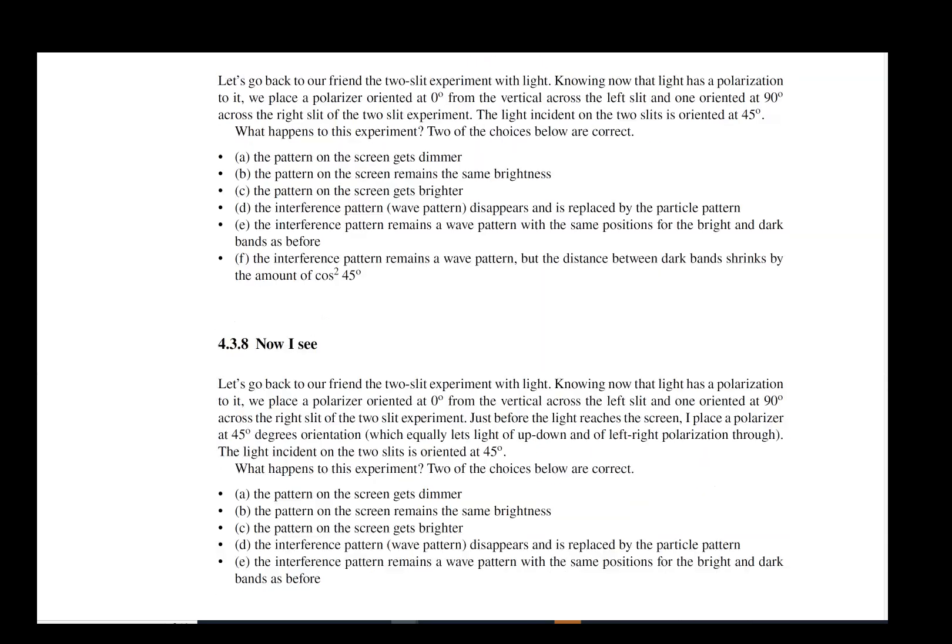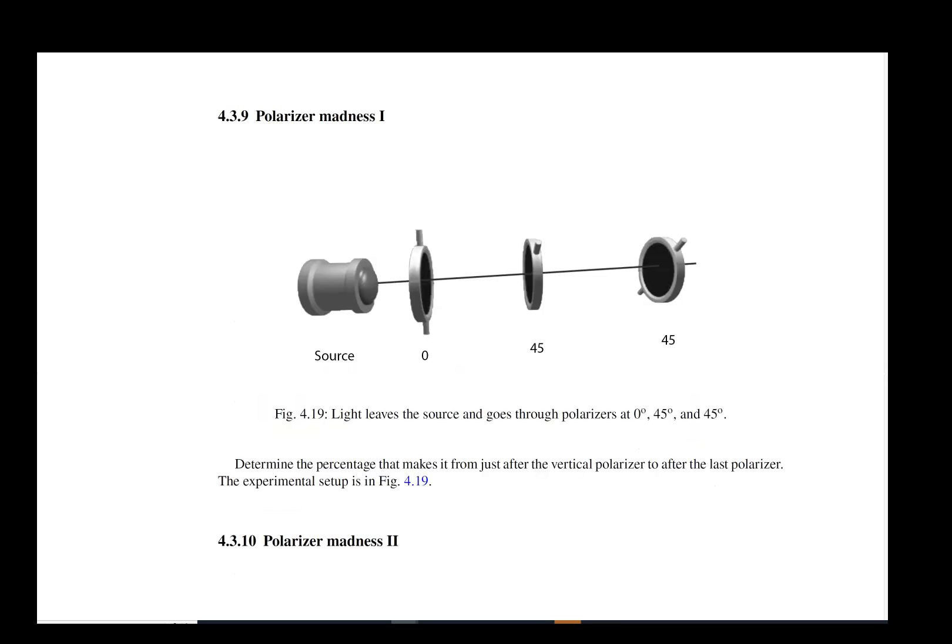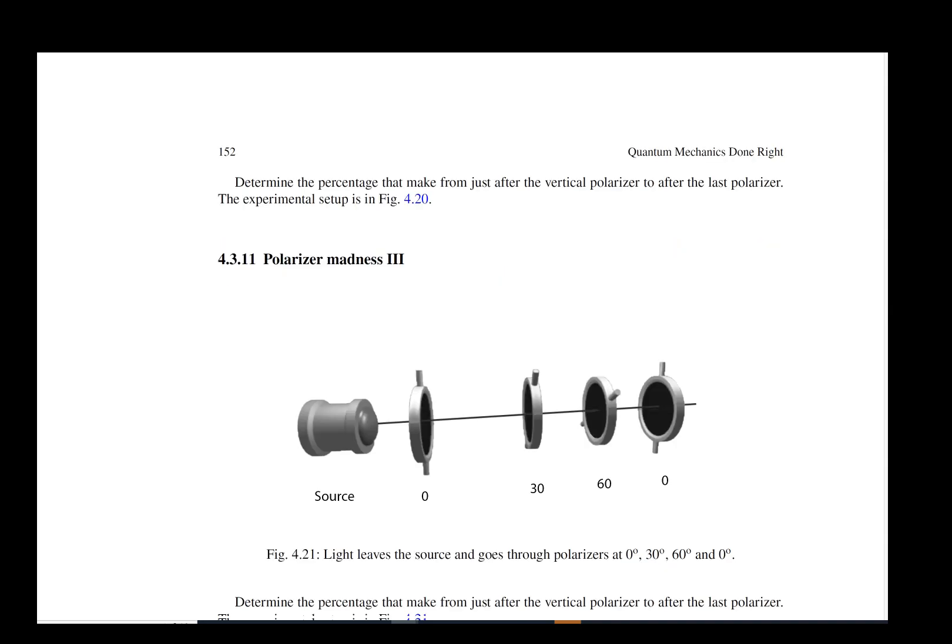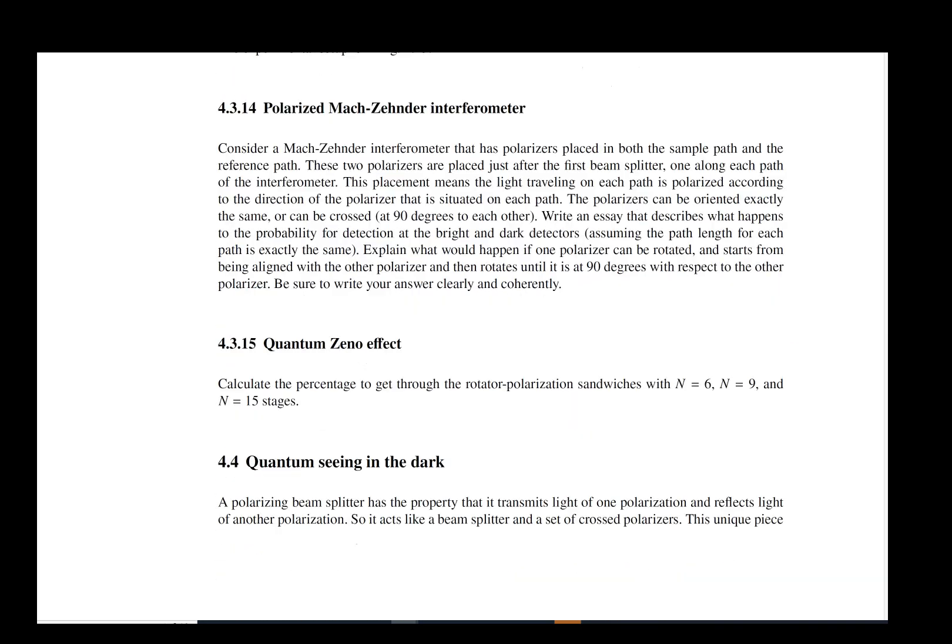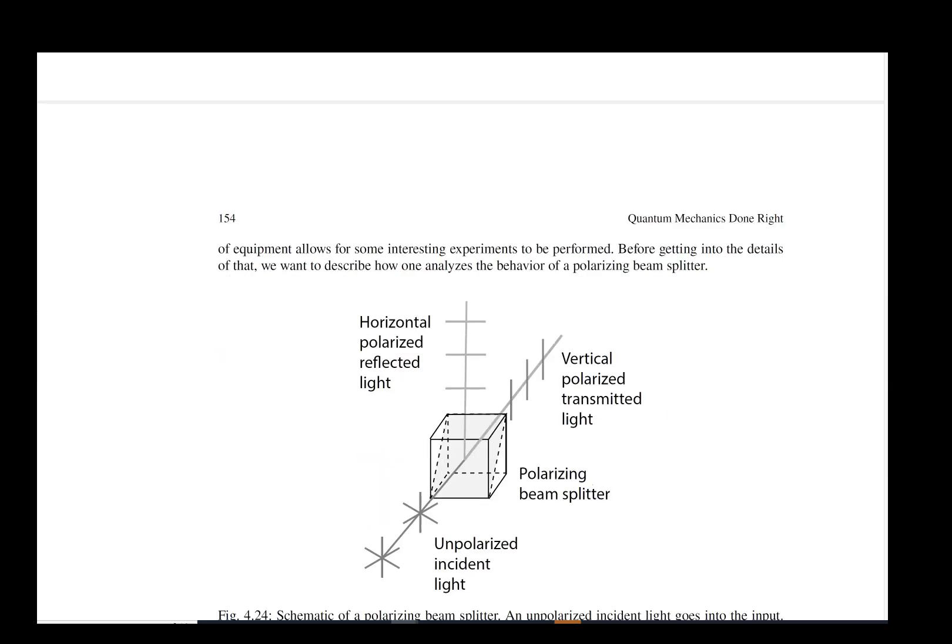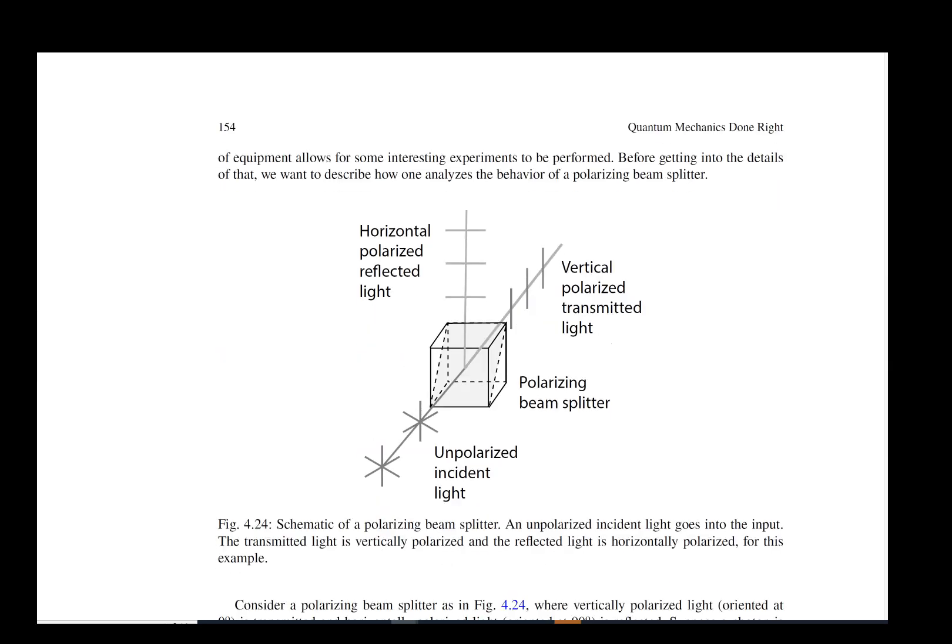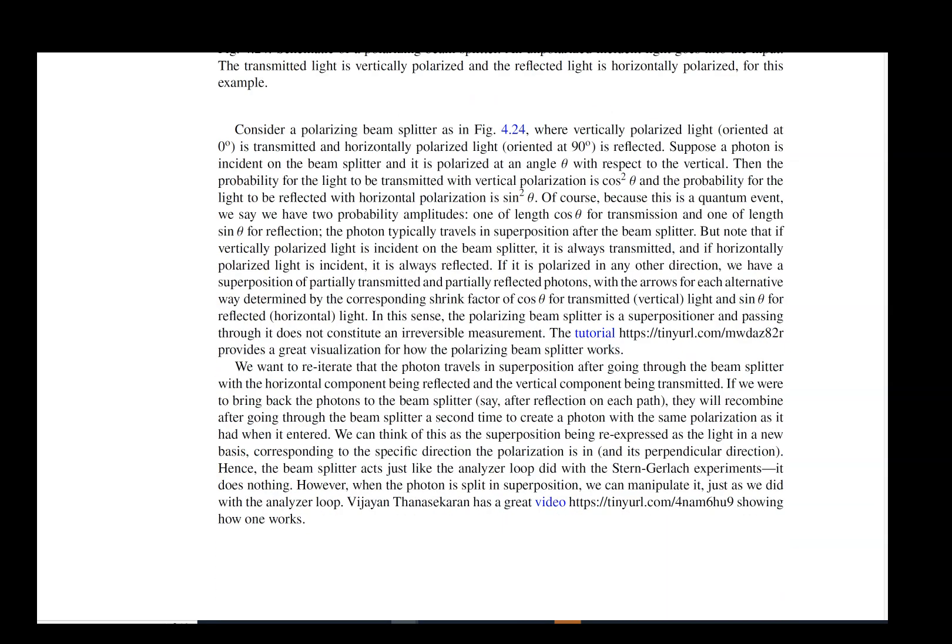Eventually we get to the true quantum seeing in the dark experiment. We need to use a device called a polarizing beam splitter. It acts just like the beam splitter but it will reflect horizontally polarized light and transmit the vertically polarized light, so it acts in some sense like a switch that is built off of the polarization.